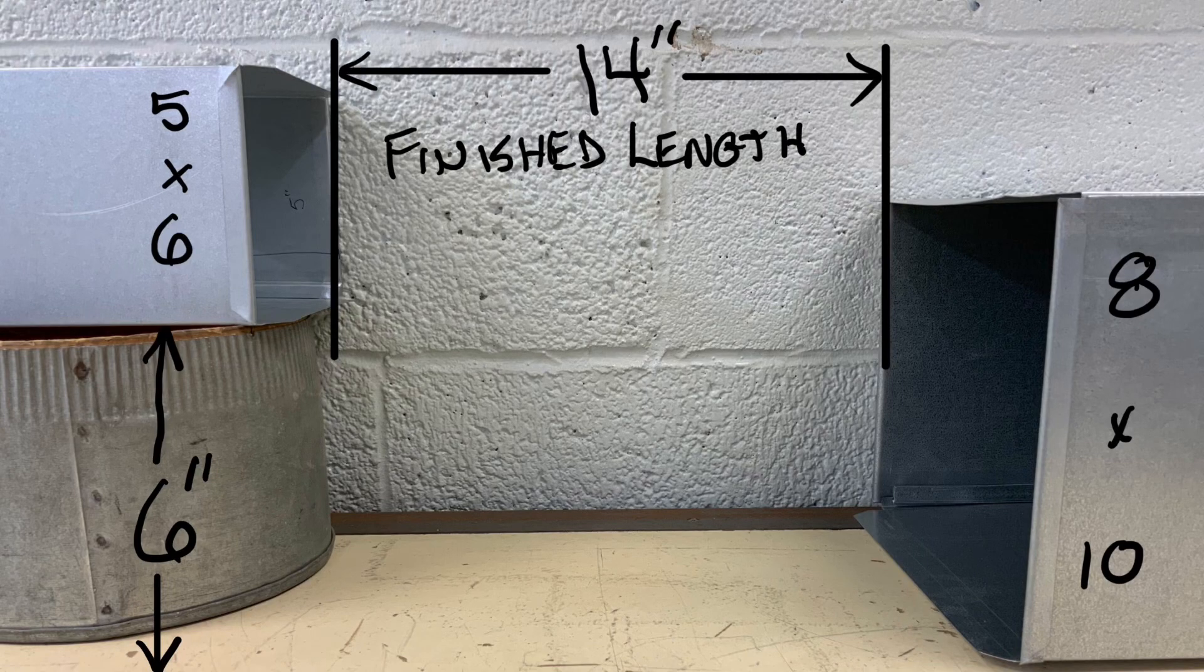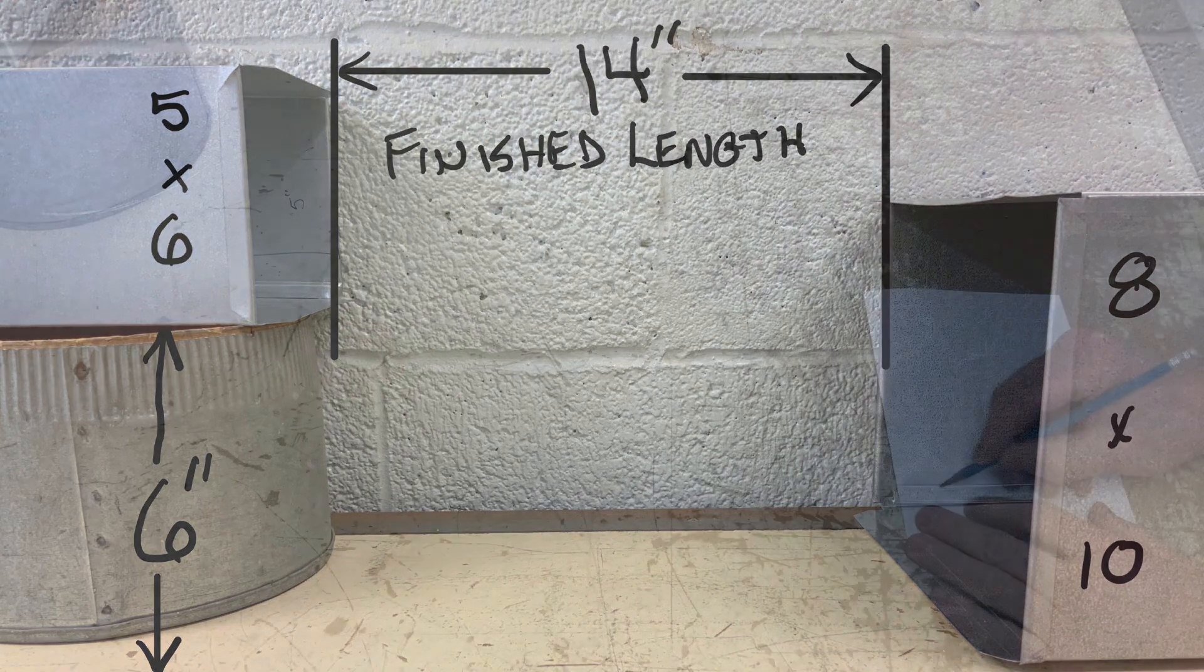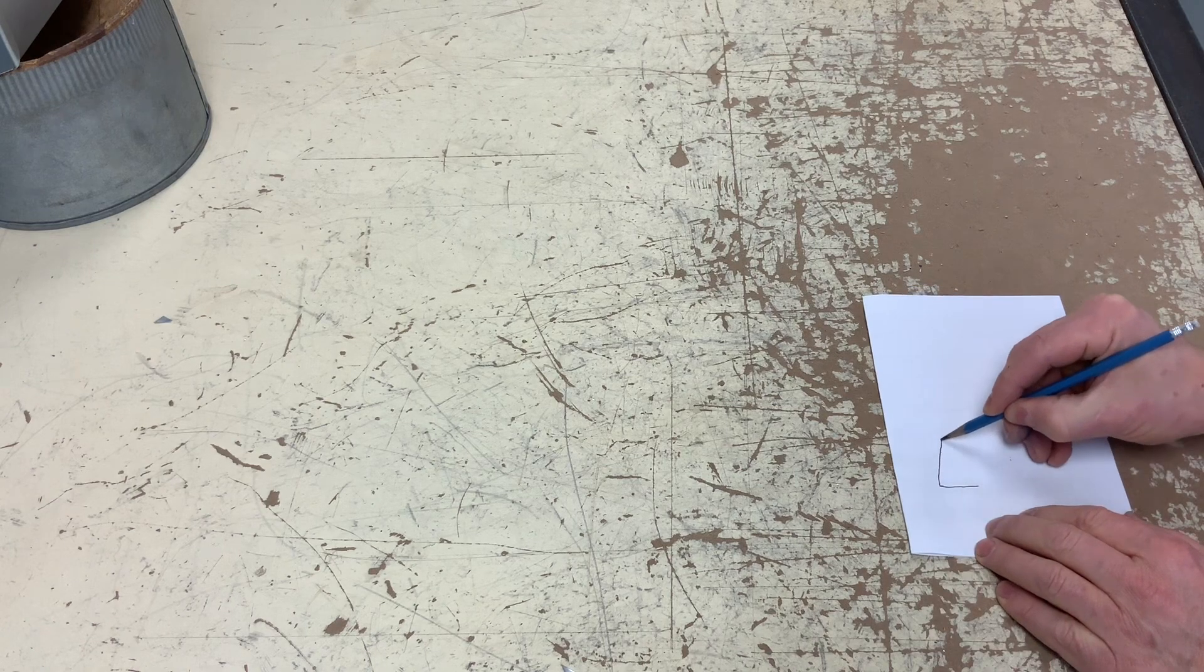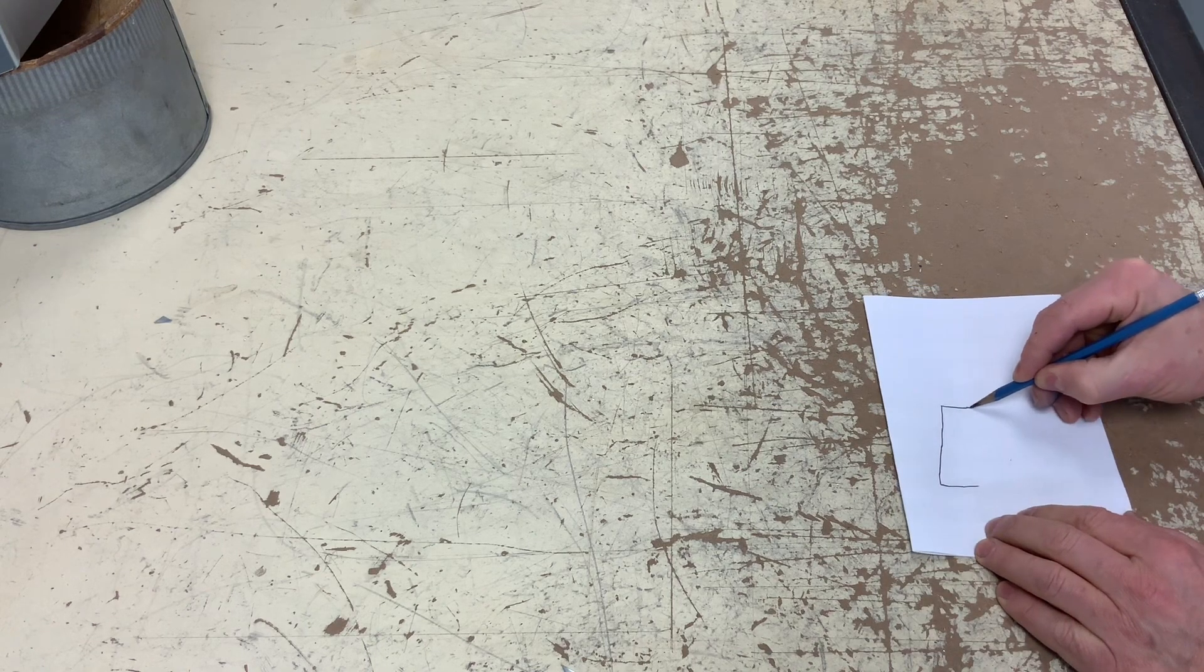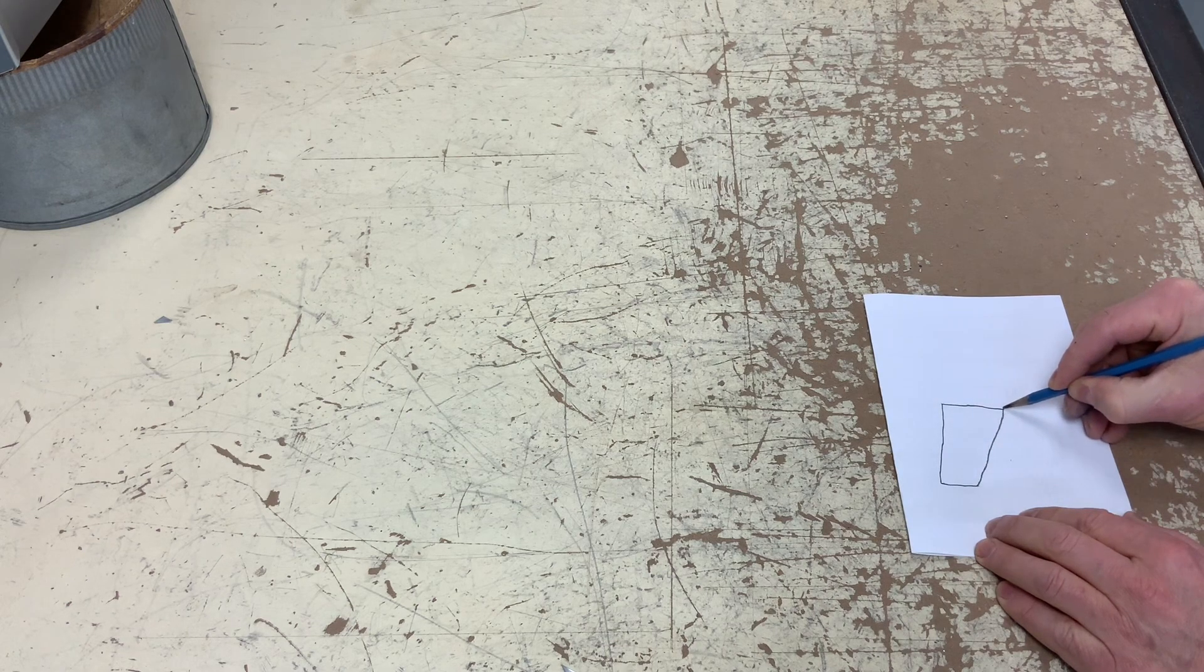Here I'm going to demonstrate a transition with three sides slanted or sloping. First of all, it all starts with a sketch of the fitting you would like to build.